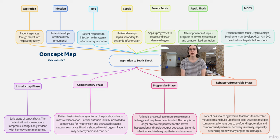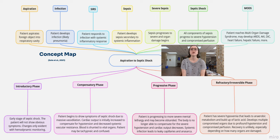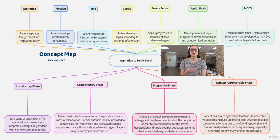Once we reach septic shock, we have some stages. The introductory phase is a very early stage of septic shock where you're not going to see any symptoms from your patient, but if you have your patient on hemodynamic monitoring, you may see it on their CVP or pulmonary artery pressure. Then we move to the compensatory phase, where you're going to start to see some symptoms — they may be tachypneic, confused. For septic shock with infection, you may see flushing from vasodilation, a drop in blood pressure, and a raise in heart rate as the body tries to compensate and send blood to the major organs.